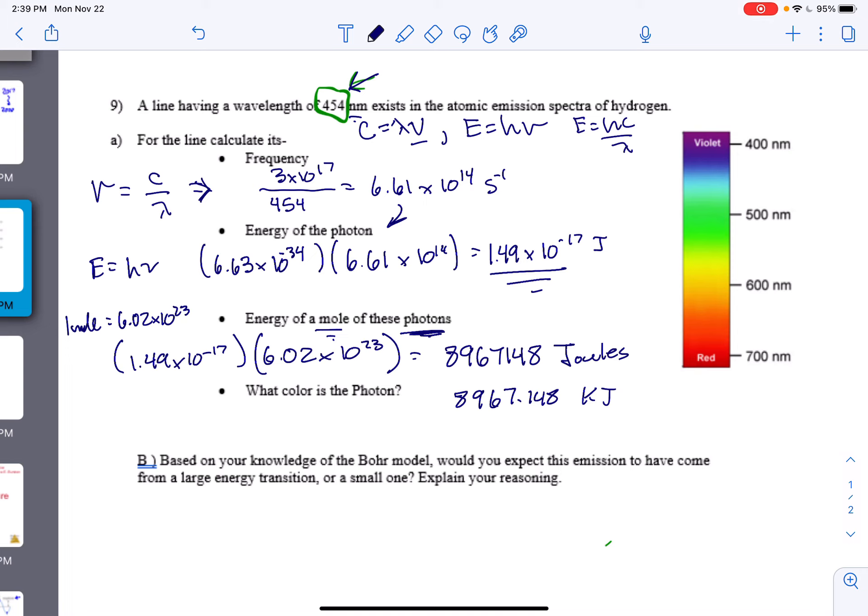Then what color is this photon? The color is pretty simple. You have this rainbow right here, or spectrum. It says it's at 454, so it's right around here in the teal or light blue.